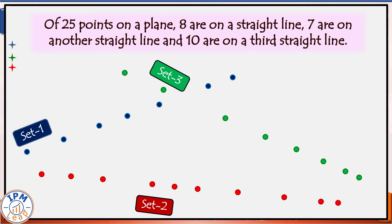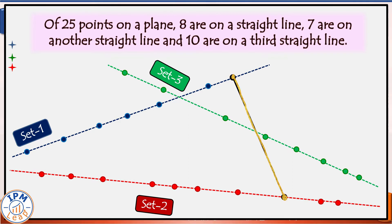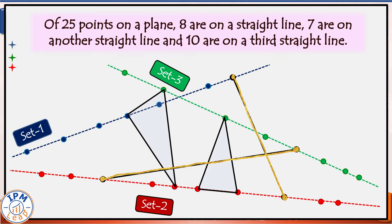Here is a pictorial depiction of the given data. Out of 25 points, these seven points in set 1 are collinear, these eight points in set 3 are collinear, and these ten points in set 2 are collinear. Now, how many points do you need to draw a straight line? Just two points are enough. We can form a straight line by joining any two points. Similarly, because a triangle has three vertices, we can join any three points to form a triangle, provided those three points are not collinear.